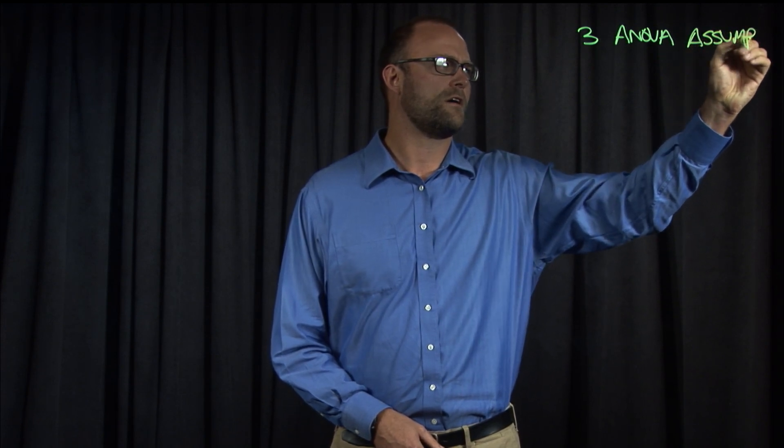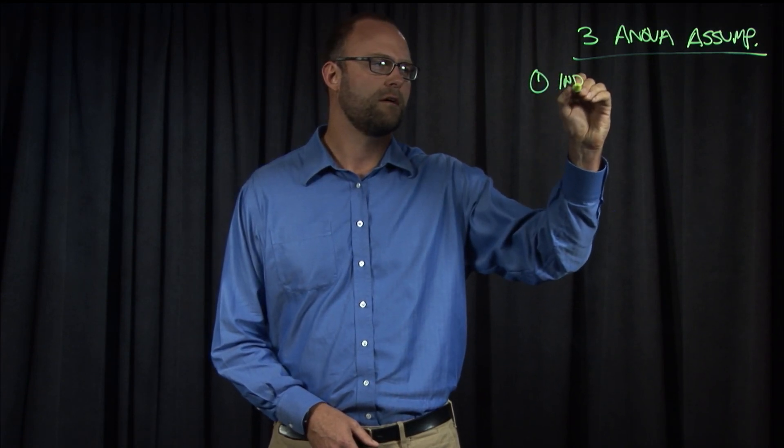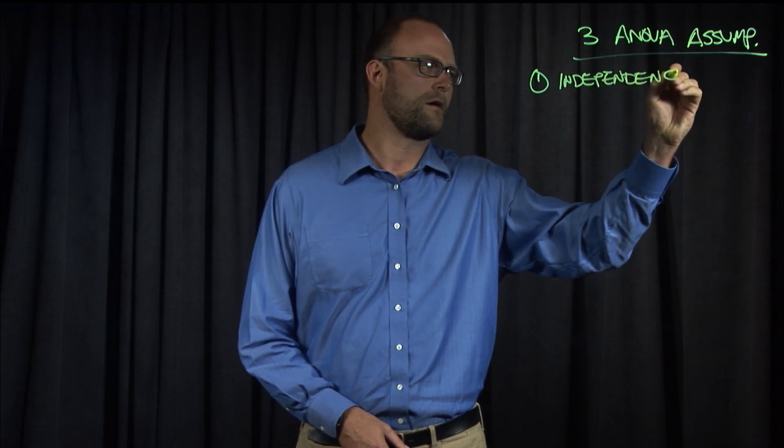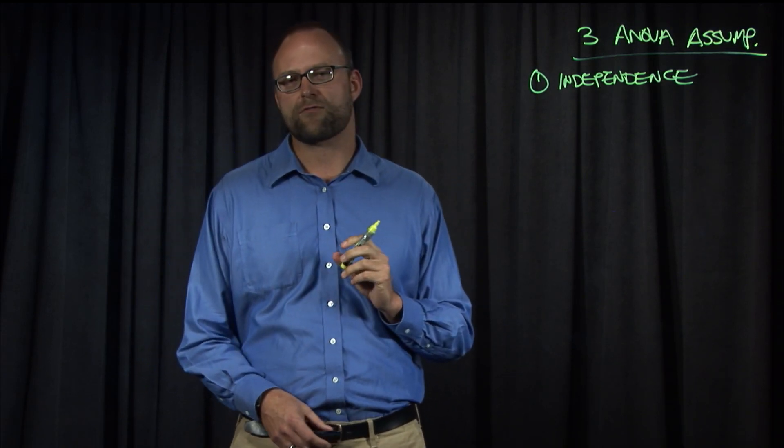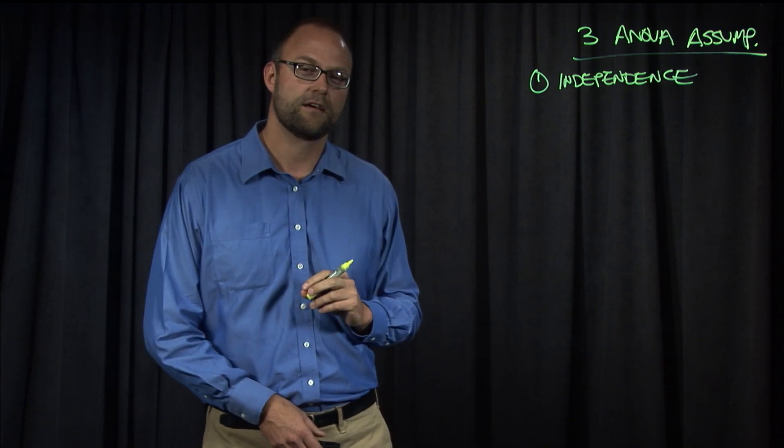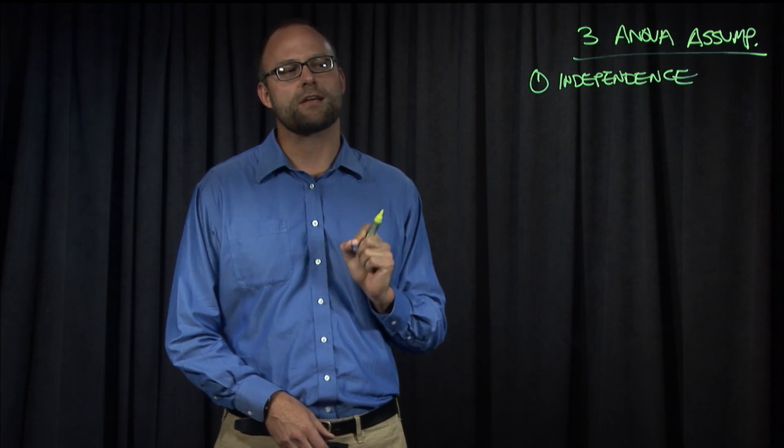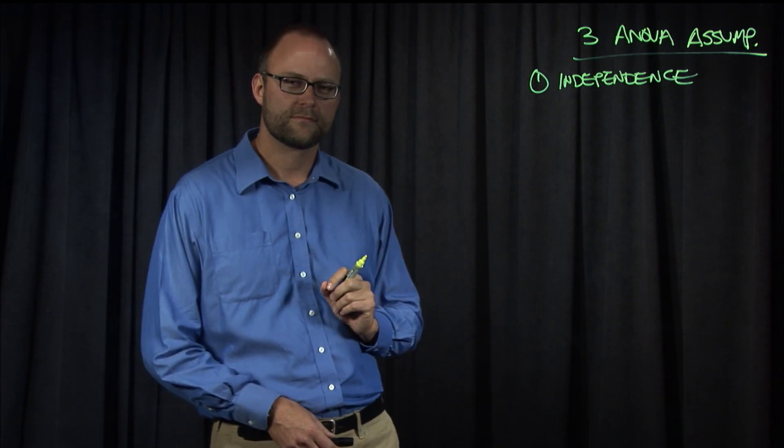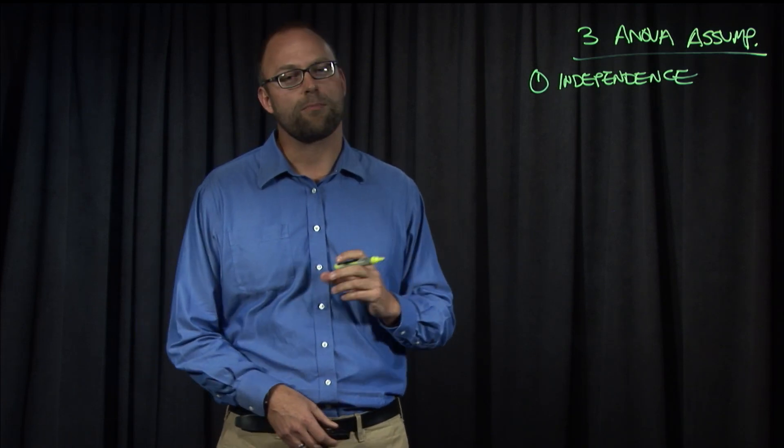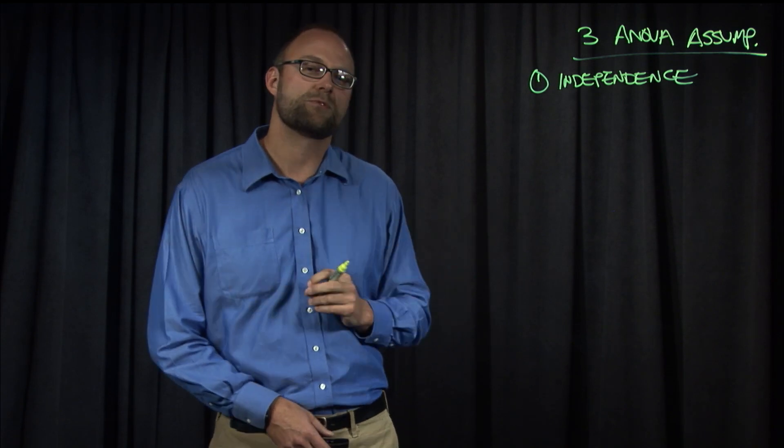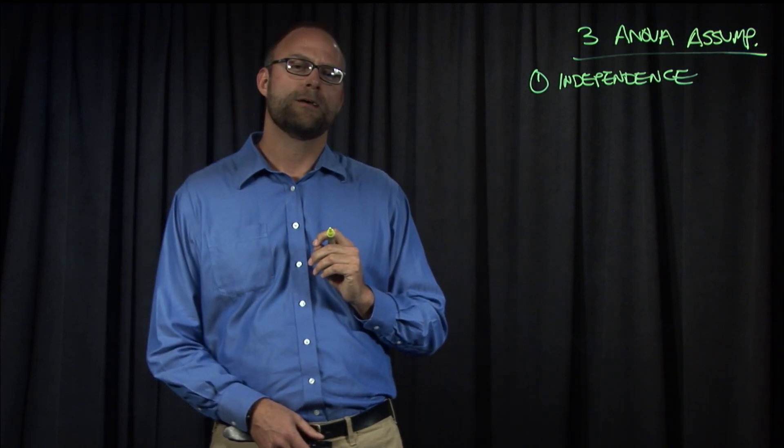So three ANOVA assumptions. The first one is the assumption of independence. What is independence? Independence means that each subject is sampled independently of every other subject. Certain sampling approaches actually violate this, like snowball sampling, where you have one subject recommend the next one to contact. It also means that measures on a subject are independent of measures on every other subject. It doesn't mean in within-subject studies that measures on the same subject are independent, because obviously they're not. That's the whole point of a within-subject variable, that one subject is measured multiple times. That's also called repeated measures, and we'll talk a lot more about that in the future. So that's the independence assumption, and it's verified through the experiment design.